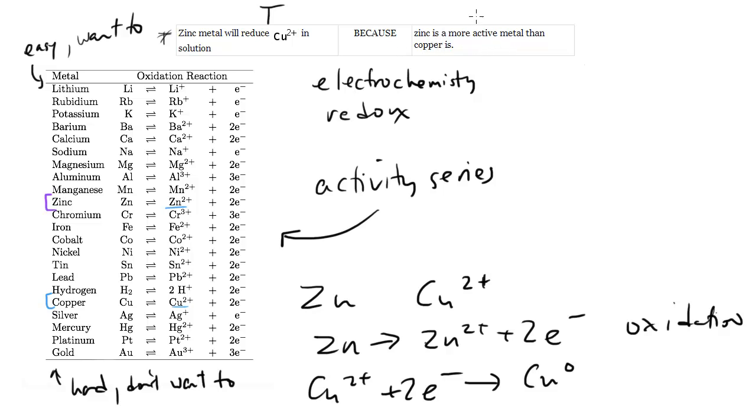Zinc is a more active metal than copper. Yeah, I mean that's what we just talked about, right? Zinc is higher on the list, which means it's more active than copper is, and this is indeed also a correct explanation because this explains its higher activity, explains why the zinc will become the ion and the copper ion will turn into the plain old copper.